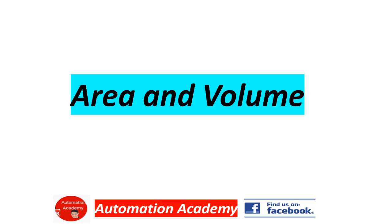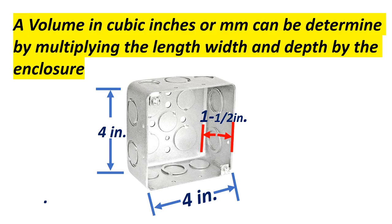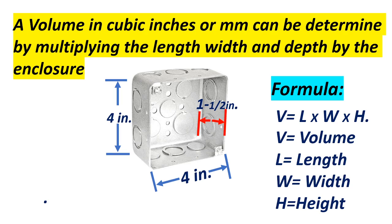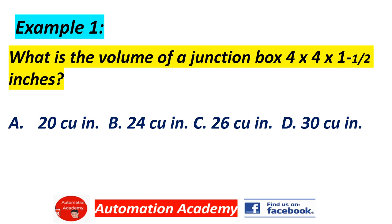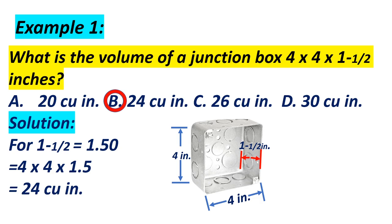Our next topic is area and volume. Volume in cubic inches or millimeters can be determined by multiplying the length, width, and depth of an enclosure. Example: a utility box with length 4 inches, width 4 inches, and depth 1.5 inches. The formula is V = L × W × H. Example 1: what is the volume of a junction box 4 × 4 × 1.5 inches? Answer: B, 24 cubic inches. Solution: 4 × 4 × 1.5 = 24 cubic inches.